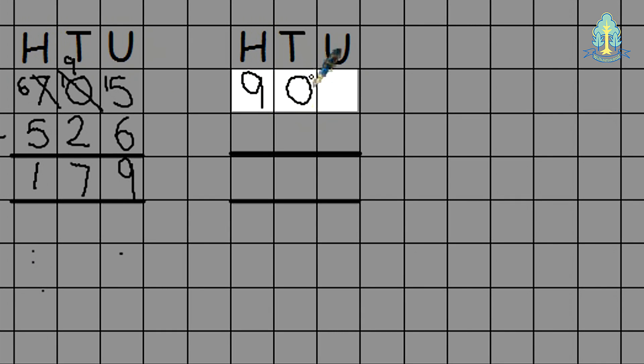Pupils then go on to subtract from hundreds. 900 take away 198. Pupils start at the units column. 0 take away 8. They can't do this therefore they need to exchange. Exchanging once again from the nearest column with a value in it being the hundreds. They take 100 from the hundreds column but have to give this to the tens column giving 10 tens. Pupils then exchange from the tens column leaving them 9 tens and 10 units.